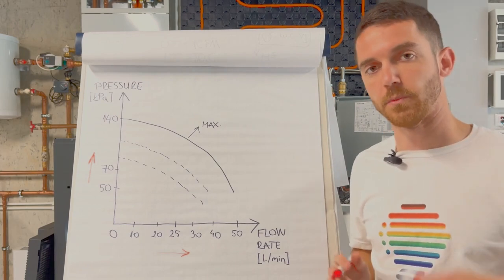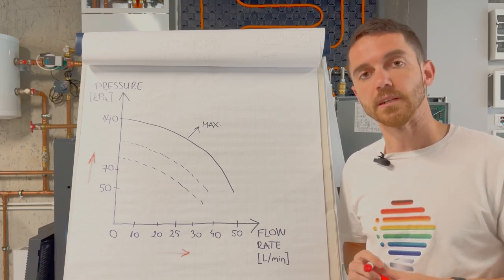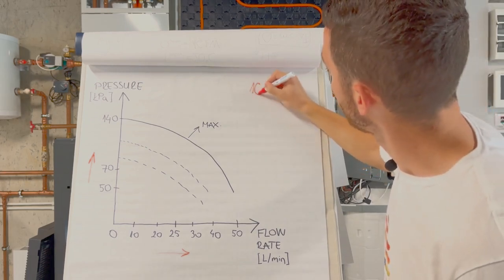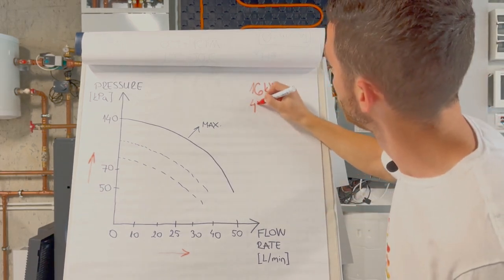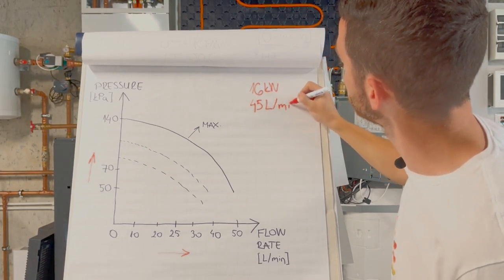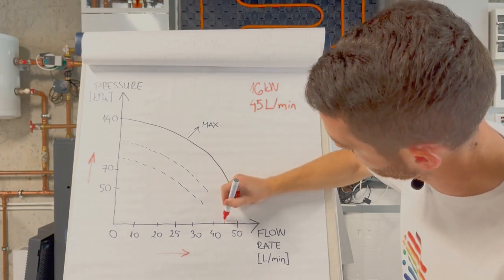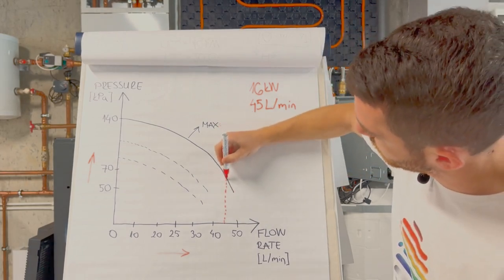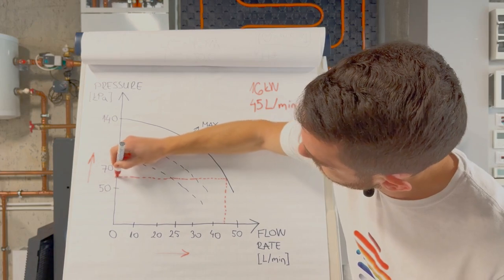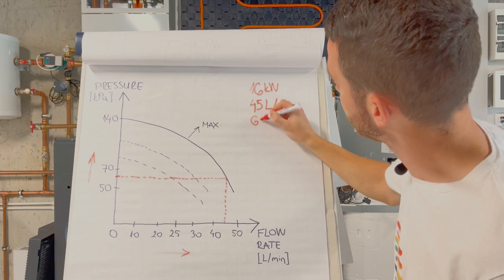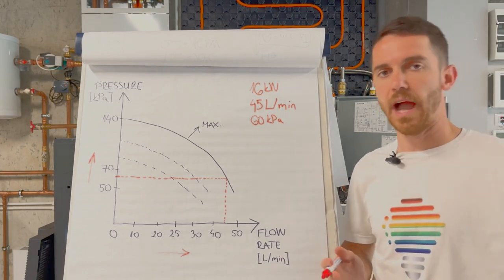What we will focus here, we will focus on the highest domestic hot water and heating heat pump, it's 16 kilowatts. And for 16 kilowatt our nominal flow rate is around 45 liters per minute. When we go here on 45 and maximum curve, we have something like this. So we have around 60 kilopascal available pressure drop.